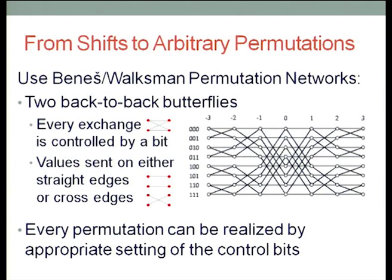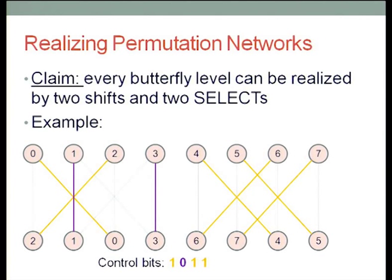You have a target permutation you want to implement — you just set the control bits appropriately, run your data through the network, and at the end you get your desired permutation. My claim is that every level of this butterfly network can be realized using just two shifts and two selects. I want to implement a whole line of these exchanges, each choosing cross or straight edges, and I claim that with array operations of shift and select, you can use a constant number of them to implement a single level of the butterfly network.